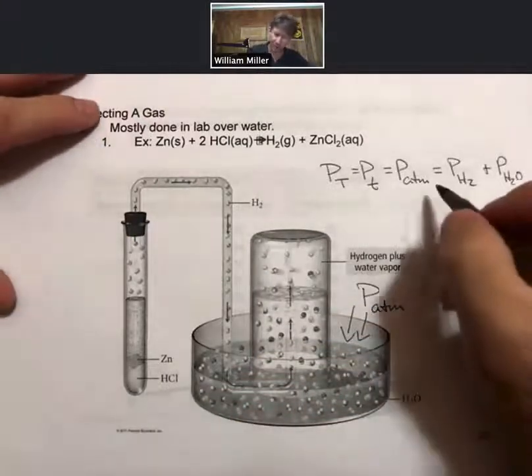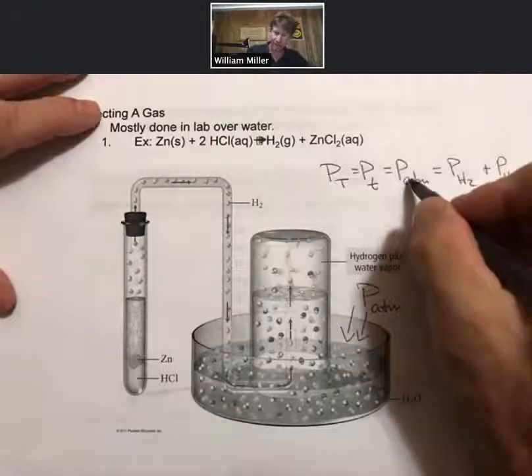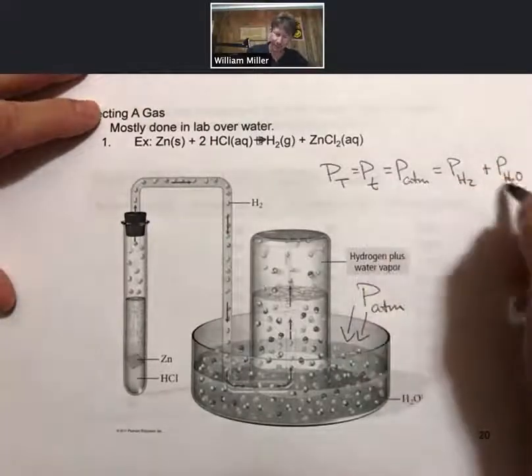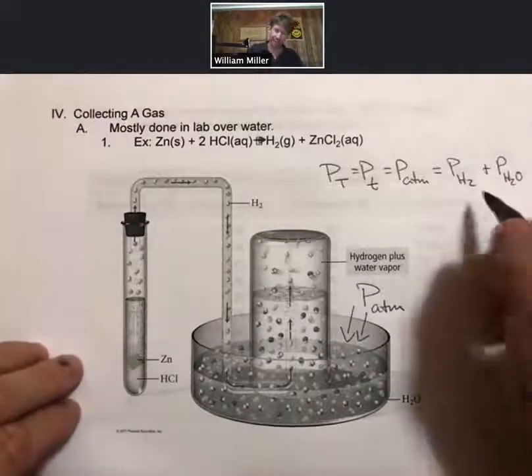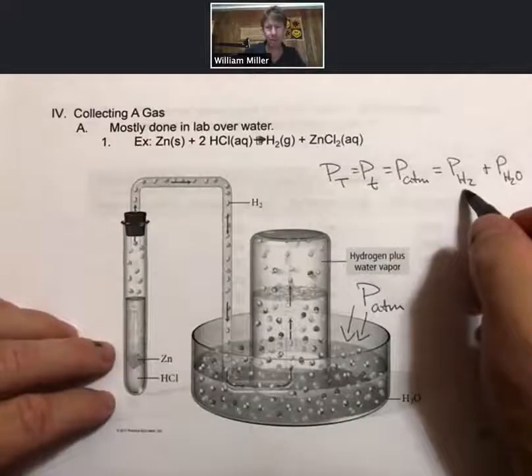Now let's talk about this partial pressure of H2O, where we get that, and then we'll be able to solve for the partial pressure of hydrogen.